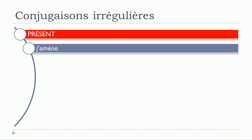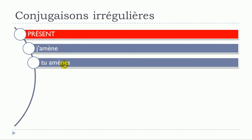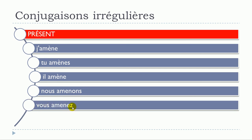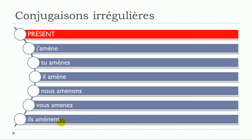We'll start with le présent: j'amène, tu amènes, il amène, nous amenons, vous amenez, ils amènent. We can see that je, tu, il, and ils are concerned by this little change — it's only the accent grave on top of the E. This changes the pronunciation: you get this open E sound — amène, tu amènes, il amène.